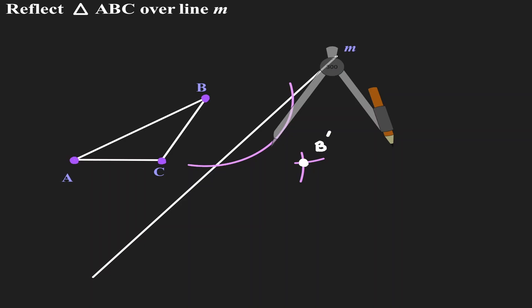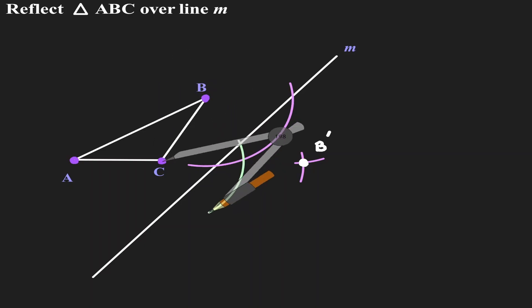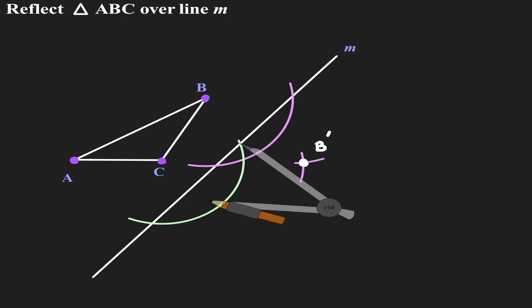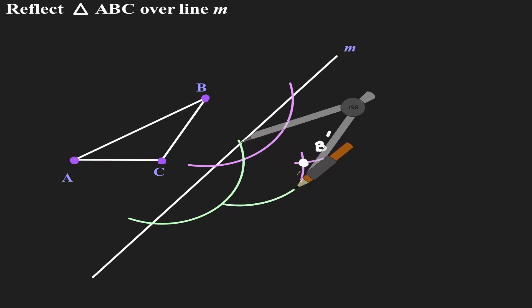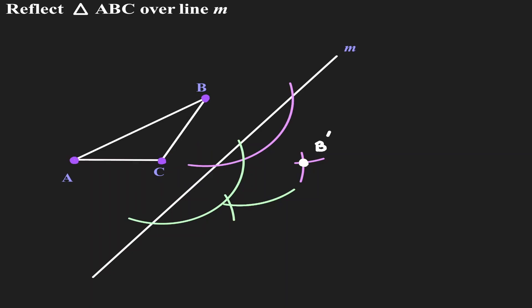Let's repeat the process, but now for point C. Let's move the metal leg to C and open the compass so that it intersects the line at two different locations. Now let's move the metal leg to the first intersection and make a mark on the inside. Without changing the length, move the compass to the second intersection and look for the intersection. The intersection we've just found is where we find the image of C, so let's call it C'.